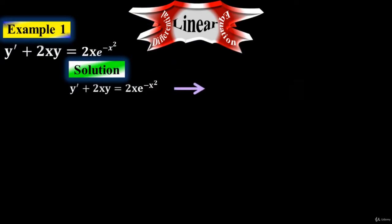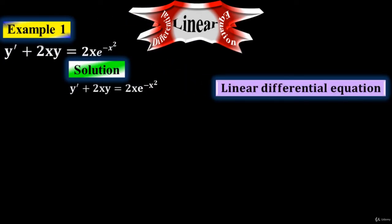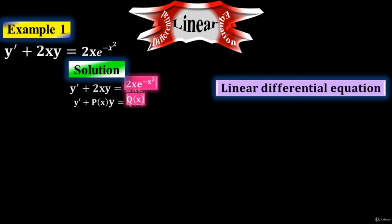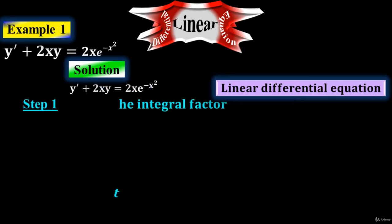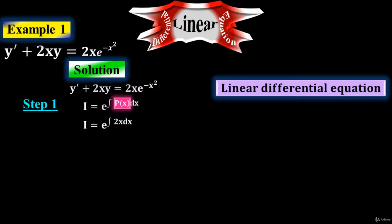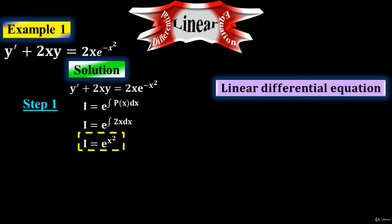It is a linear standard form of differential equation. When you compare with the standard form of linear equation, P of x is 2x and Q of x is 2x times e to the minus x squared. Step one: to find the integrating factor. i equals to e to the integral of P of x dx. Just substitute the value of P of x, which is 2x. After integration, i equals to e to the x squared, because the integral of 2x is x squared. This is the final value of the integrating factor in step one.